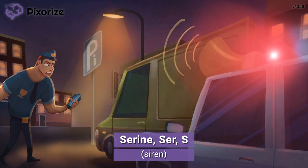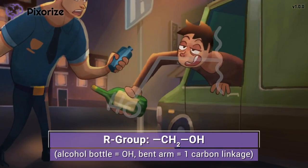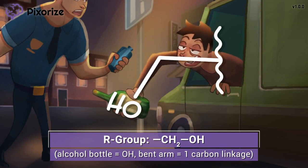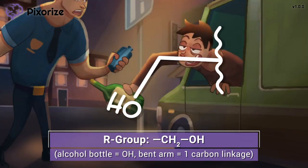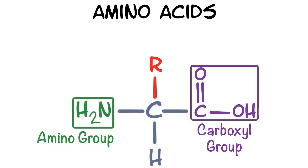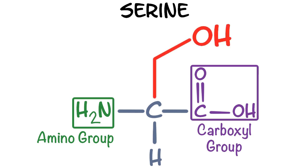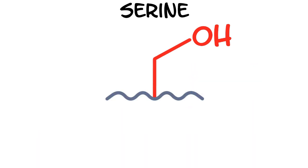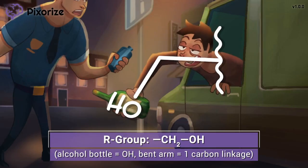Let's move on to learn the chemical structure of this amino acid. What's that in the driver's arm? Is that an alcohol bottle dangling out of the window? Looks like you've pulled this driver over for drunk driving. This arm holding an alcohol bottle is our symbol for the hydroxymethyl R group of serine, since hydroxyl is just another name for an alcohol. Recall that all amino acids have a common structure containing an amino group, a carboxyl group, and an R group or side chain around a central or alpha carbon. For serine, this R group is a hydroxyl — a single carbon or methyl attached to a hydroxyl group — and it even looks like the driver's bent arm grasping the alcohol bottle.